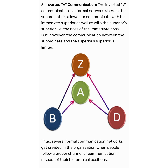In every organization, the type of communication network adopted depends upon the communication policy and the pattern of working. Generally, in a bureaucratic organization — that is, mostly in the case of government companies or government organizations — the Inverted V network is more popular. In an organization which works in a dynamic business environment, the circular network is followed. For example, an IT company.